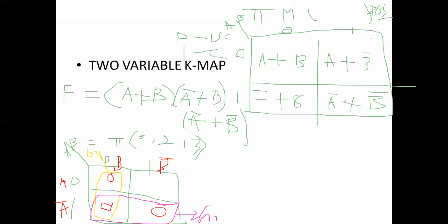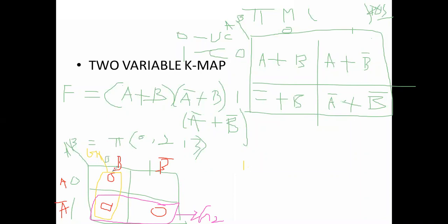Observe group 1 first. This group covers A plus A bar — both are covered, that equals 1. The B value for this group is only at B equal to 0, that's why this is B. So totally for the first group, we are getting the value B.